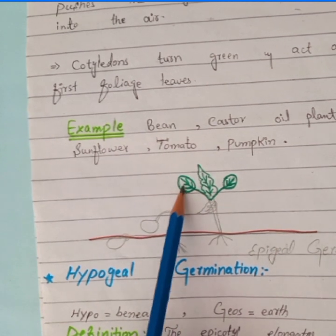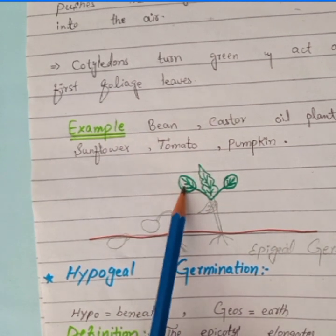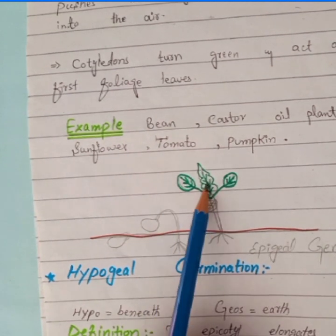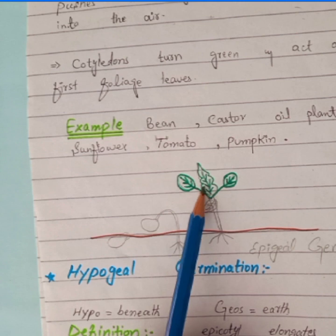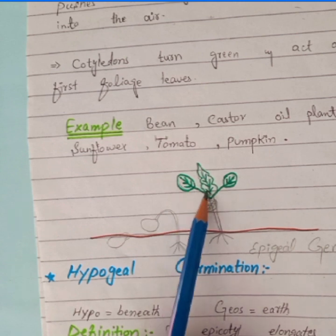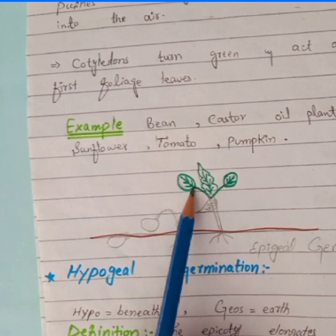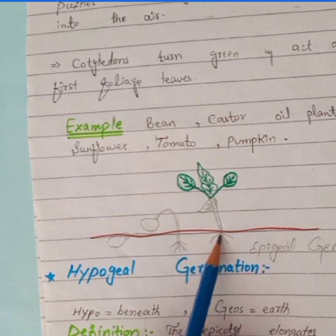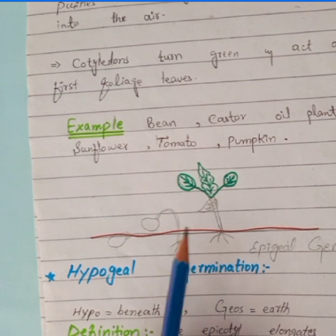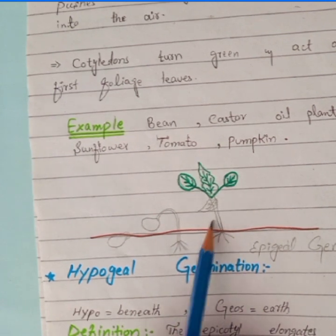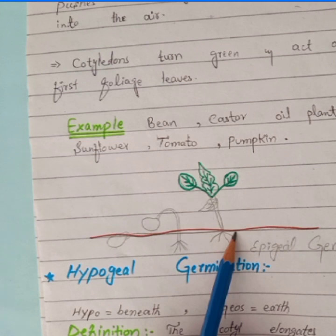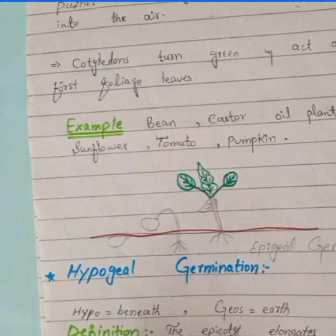The cotyledons act as the first foliage, and the plumule gives rise to a new shoot or leaves. Both the plumule and cotyledons are in the air, while the hypocotyl and roots are under the soil. This kind of germination is known as epigeal germination.